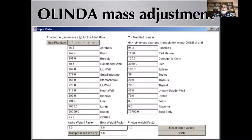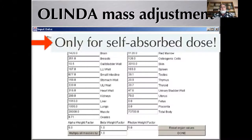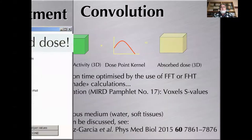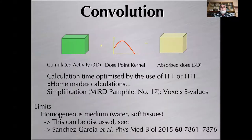As we saw in the Olinda version 2 example, the self-absorbed dose is quite often the most important contribution for any source organ. So the fact that you cannot correct for cross-contributions may not be such a big deal after all. The mass correction for self-absorbed dose is very important. That brings us to convolution.